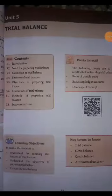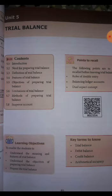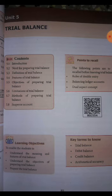We are going to see 11th accountancy unit 5, trial balance. In the last class we have seen the trial balance. Trial balance means all the ledger balances will be recorded in the debit side and the credit side. If both debit and credit balances get tallied, we can confirm that we have made the entries in the journal as well as in the ledger correctly. If it is not tallied, we have done some mistakes in the ledger balances.